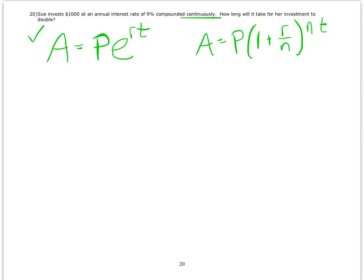We're going to use A equals P E to the R T. So they tell us that P is 1,000, so I'm going to start plugging in the stuff I know here. The interest rate is 9%, which we would write as 0.09.